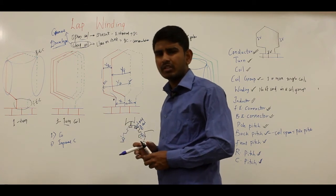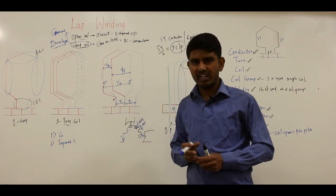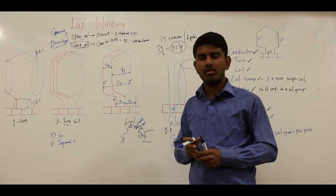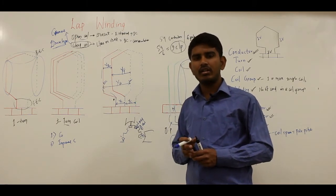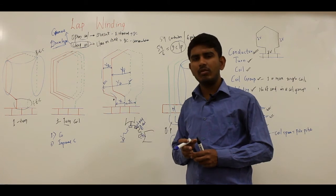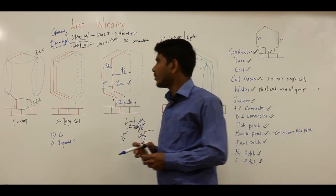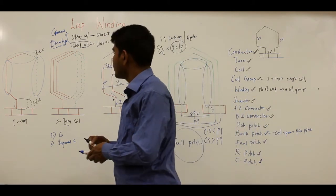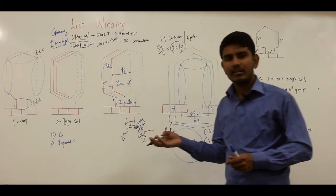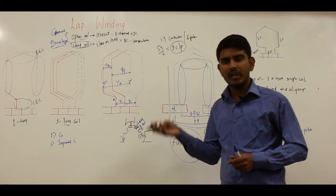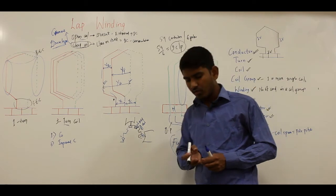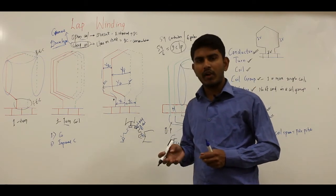The drum type winding can be single layer or double layer. Mostly double layer is used where coils can be preformed and insulated before placing in the slots. Due to economic reasons double layer winding is preferred. These drum type windings are basically of three types: lap winding, wave winding, and frog-leg winding, which is a combination of lap and wave winding.